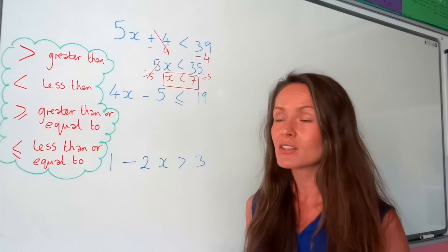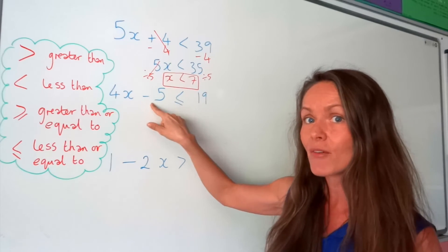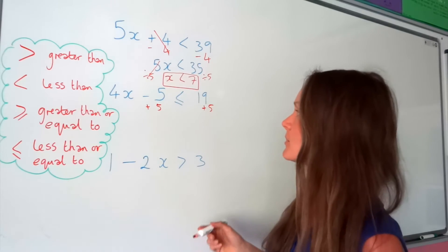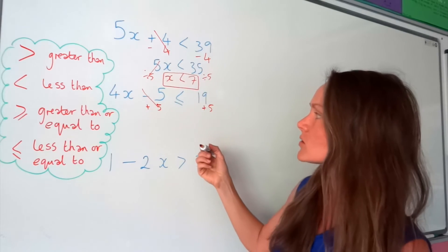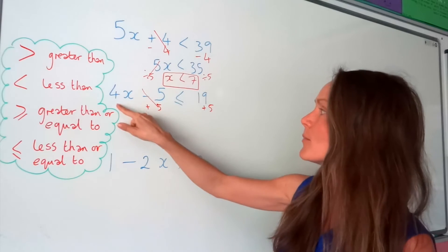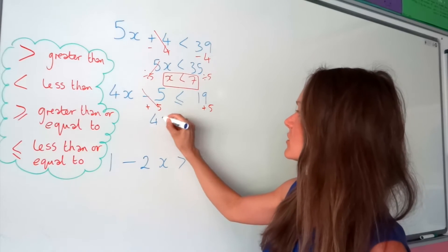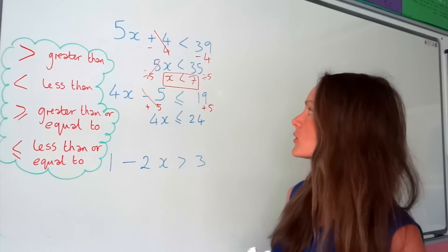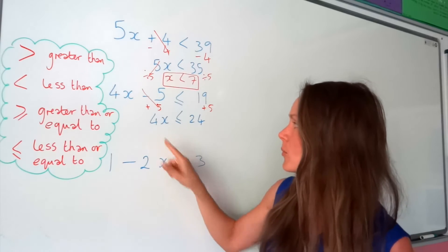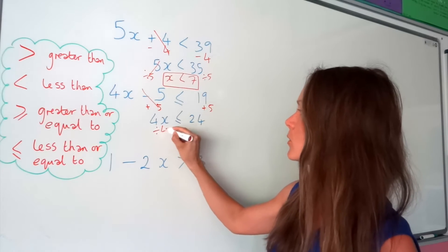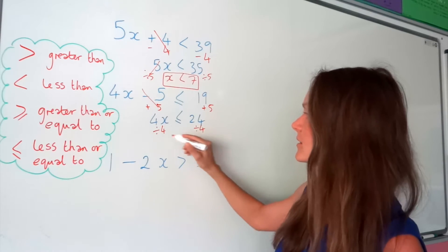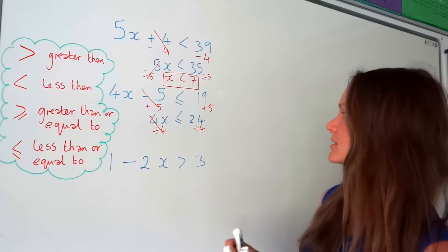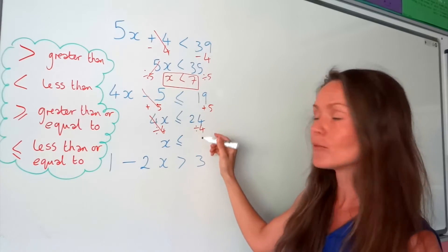On to the next one. Same idea — we need to reverse the operations. The opposite of taking away 5 is to add 5, so I add 5 to both sides to keep it balanced. Minus 5 plus 5 cancels to 0, leaving 4x. The sign stays as it is, and 19 plus 5 is 24.